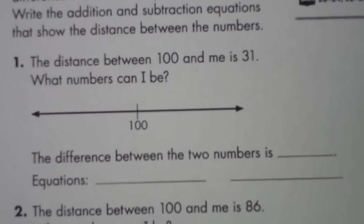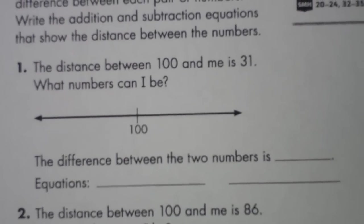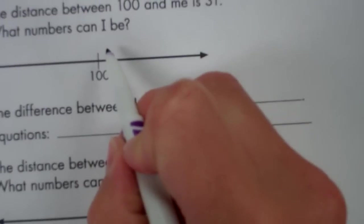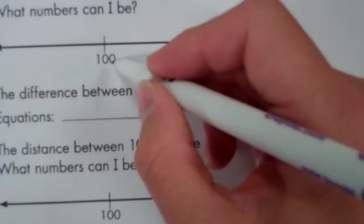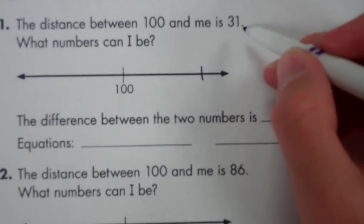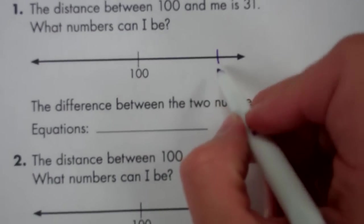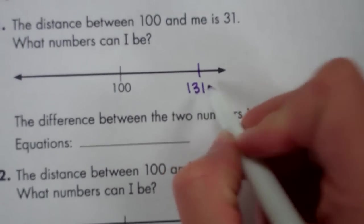Well, the students discovered there's actually two answers to that riddle. If you move 31 to the right from 100 on a number line, that's just adding 100 plus 31, which was pretty easy for us to do in our heads. That would be 131.